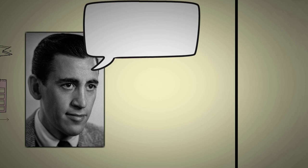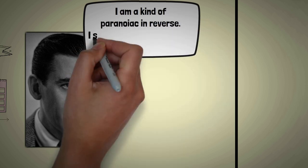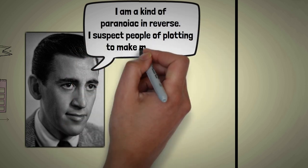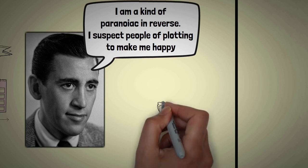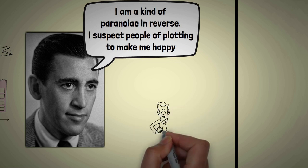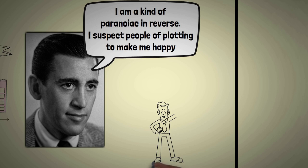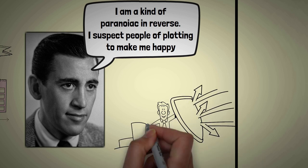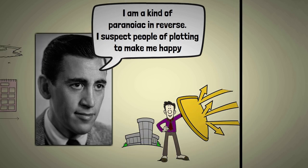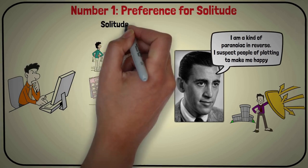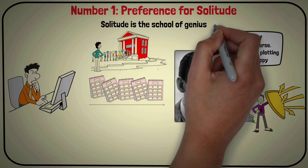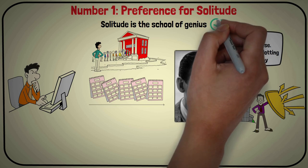He once said, I am a kind of paranoiac in reverse. I suspect people of plotting to make me happy. Salinger's words perfectly encapsulate the mindset of a Sigma male. They need to safeguard their privacy and feel content in their own company. As the saying goes, solitude is the school of genius, and for Sigma males, that is certainly true.